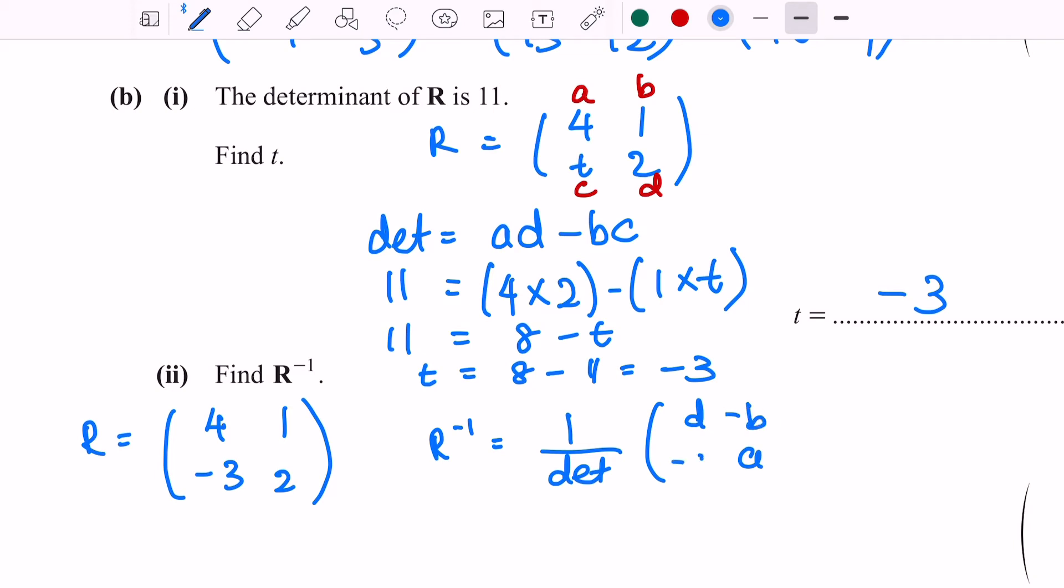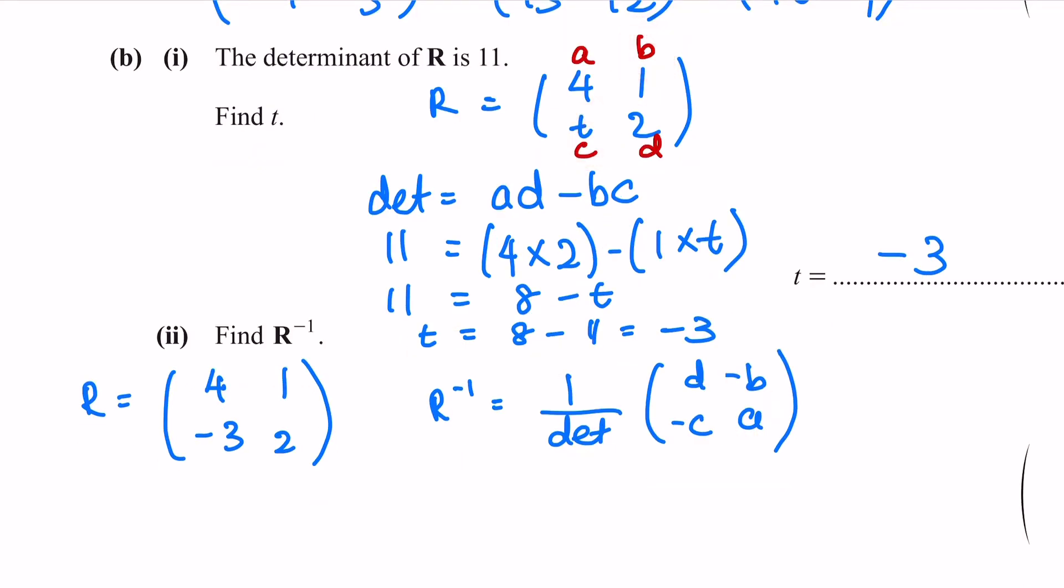What happened here is that originally a and d are here. However, whenever you have an inverse, their position swaps. Therefore, you get d on the top left, a is on the bottom right. For the -b and -c here on the inverse, b and c are stated as is. Whenever you have inverse, you have to add a negative in front of b and c.